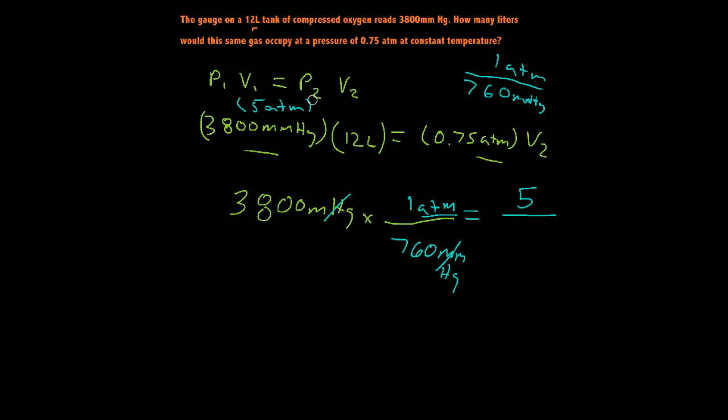All right, so now that we've done that, let's go ahead and solve for our problem. And we can even rewrite the equation so that it's easier for us to solve. So we go down here, and we have 5 ATMs times 12 liters equals 0.75 ATMs times